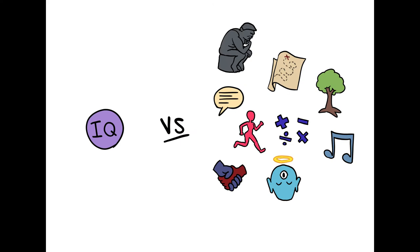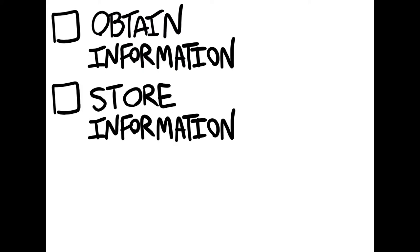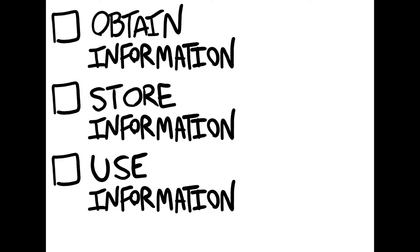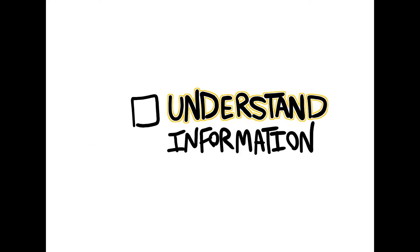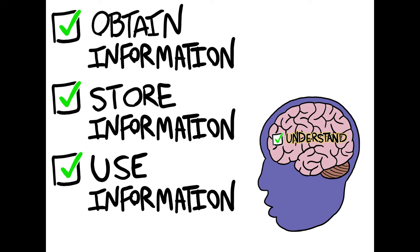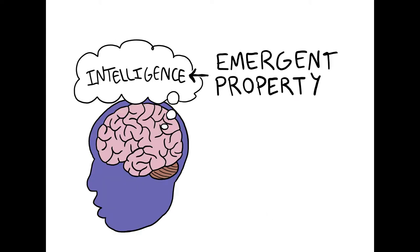Intelligence can be defined as the ability to obtain, store, and use information. Taking it a step further, we can also say intelligence includes understanding that information. For humans, the brain is responsible for intelligence. Intelligence is said to be an emergent property as a result of the activities of cells in the brain.